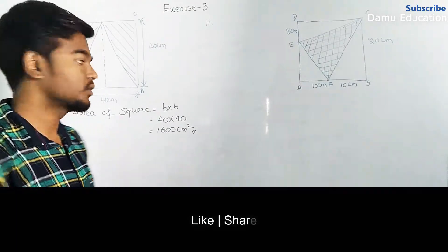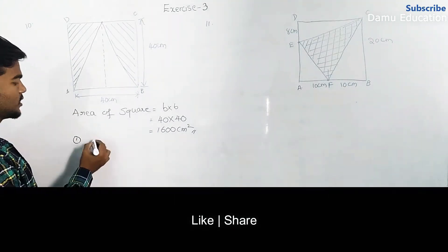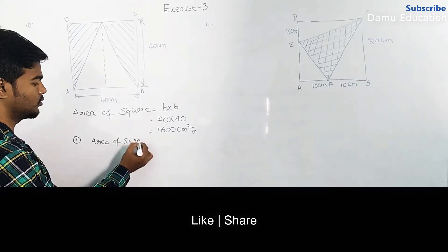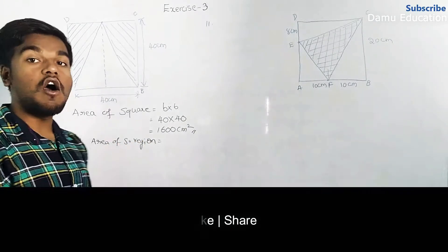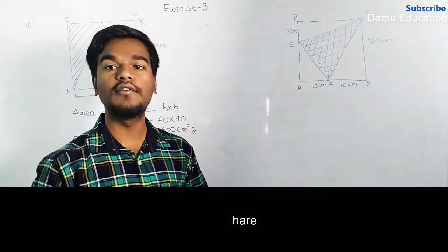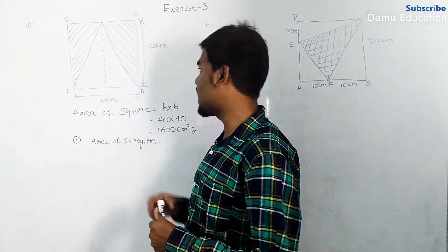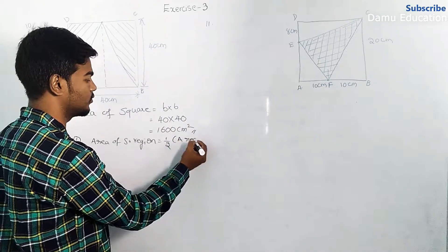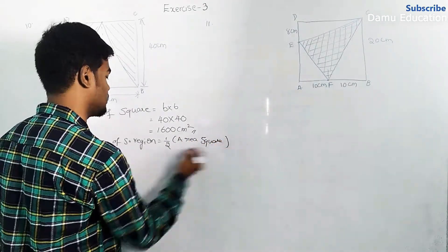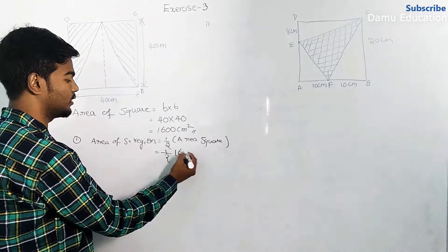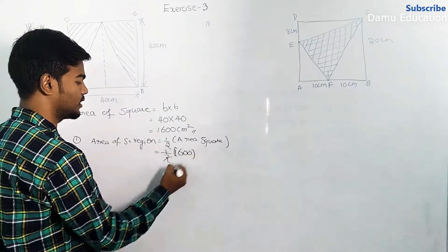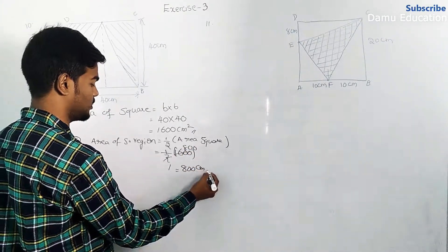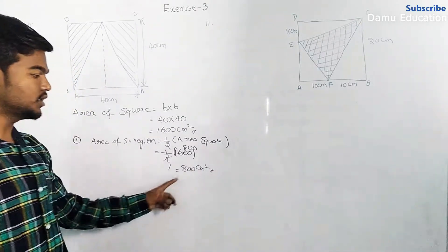First method: area of shaded region equals half of the area of square. So half of 1600 — that is 1 by 2 into 1600 — equals 800 centimeter square. So the area of shaded region is 800 centimeter square.